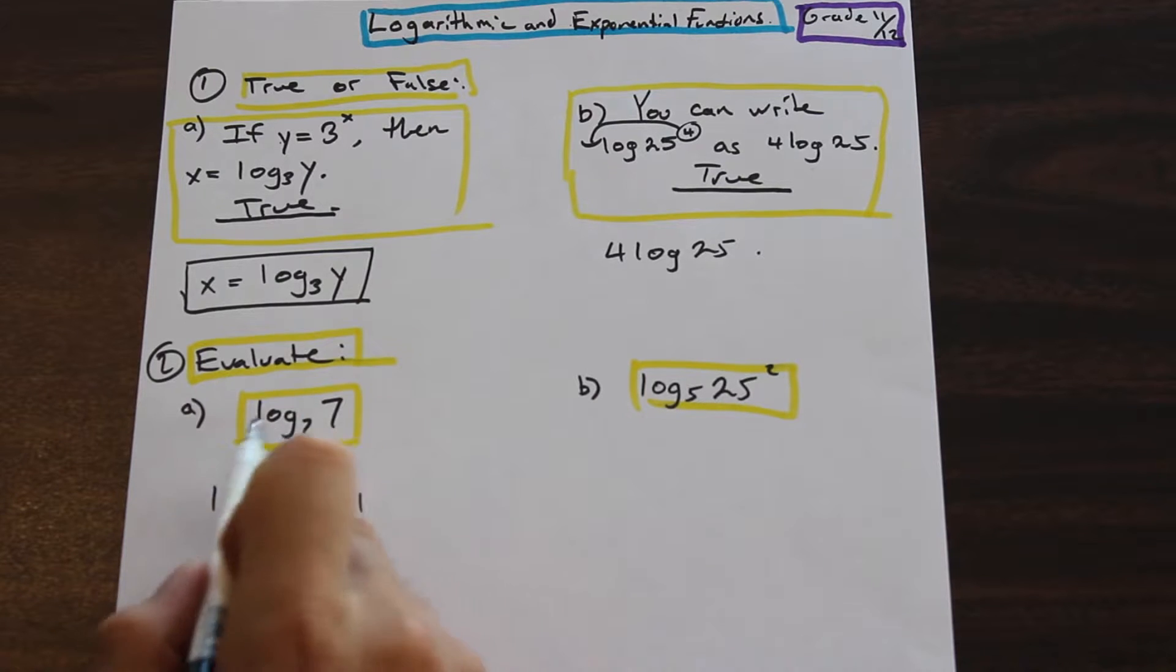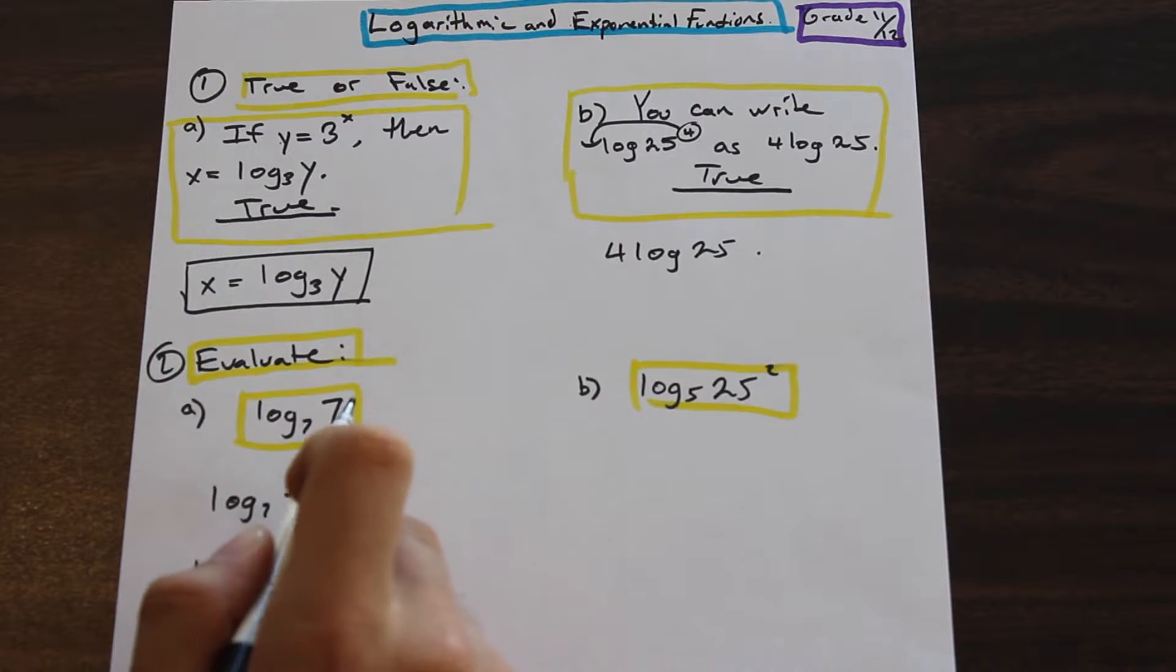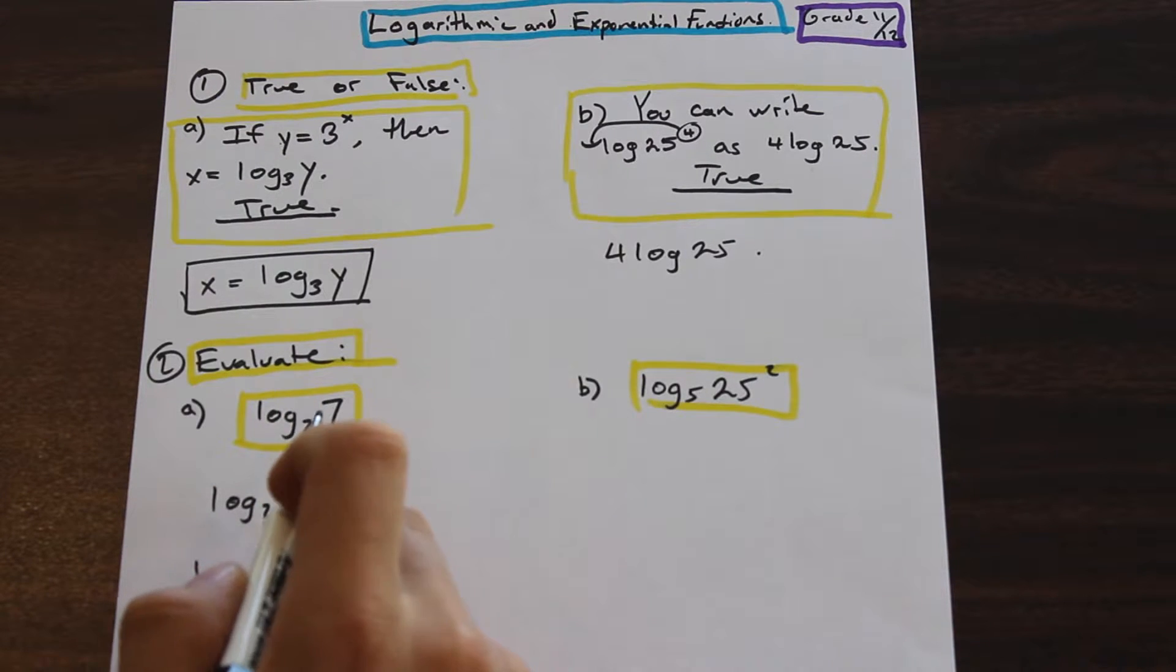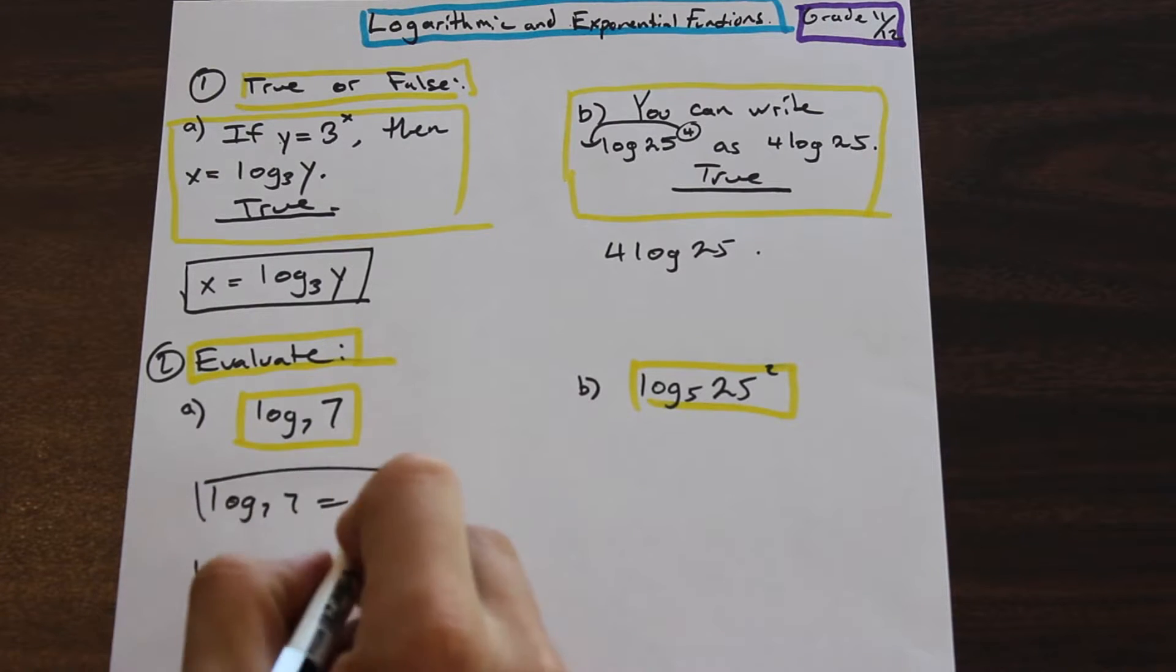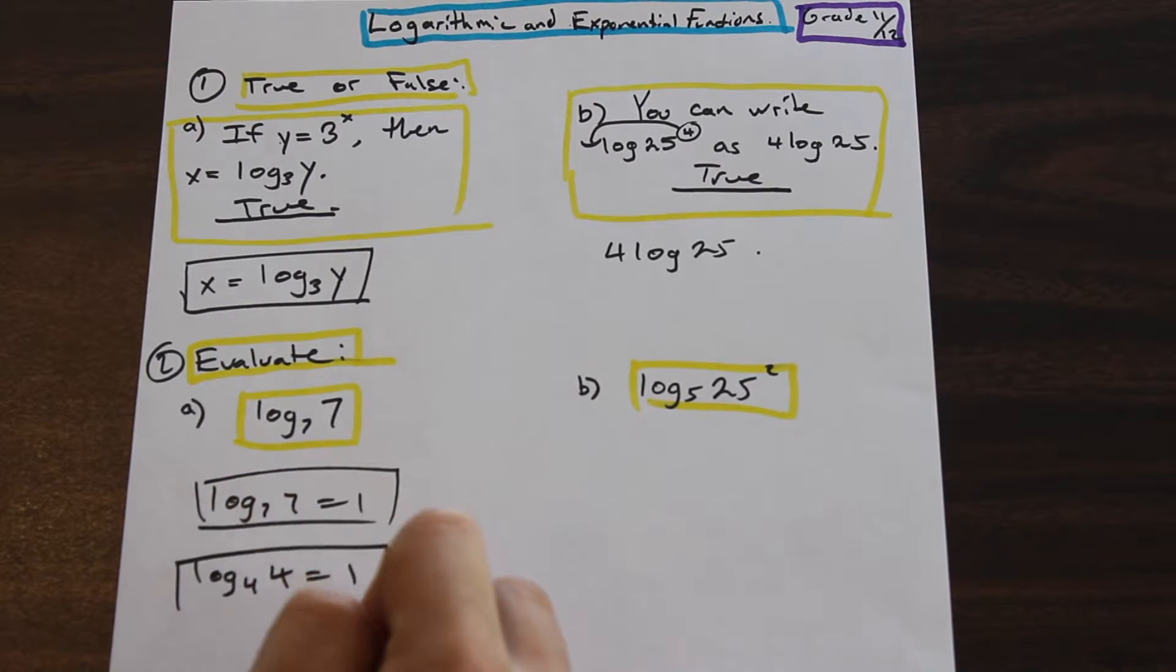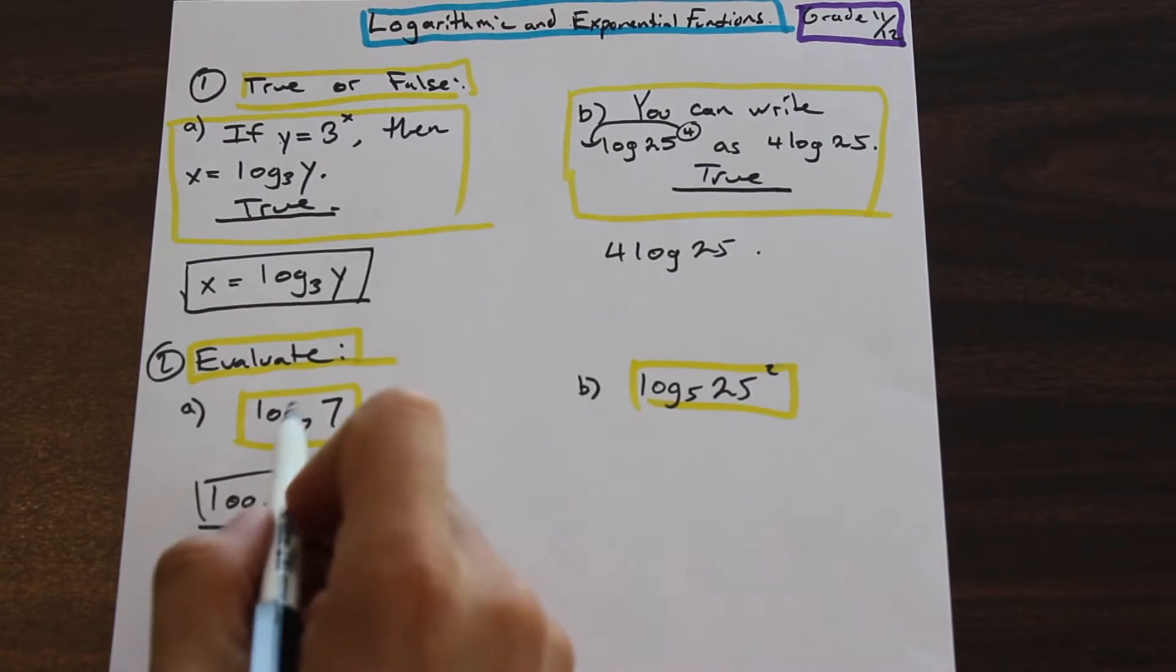And in the long answer questions like this, you can't do log base seven in your calculator. It just doesn't exist. That function doesn't really exist, or you're not able to do that usually in most calculators. So what you're going to need to do is you're going to need to play around with the number here if it's not the same.